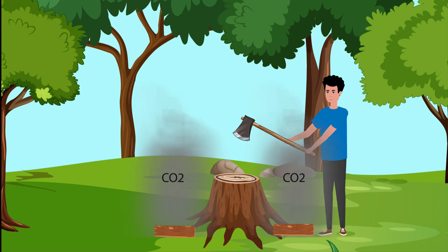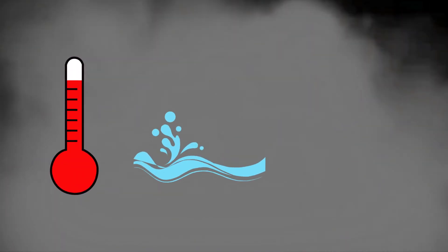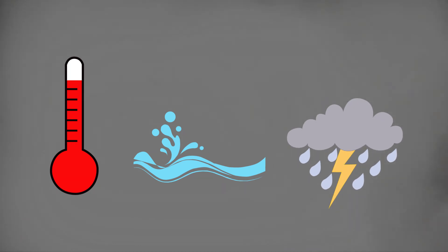With fewer trees to take in that carbon dioxide and eventually convert it, we end up increasing greenhouse gas emissions, which means raising the global temperature, altering weather and water patterns, and increasing the severity of extreme weather events. That's just one effect of deforestation.